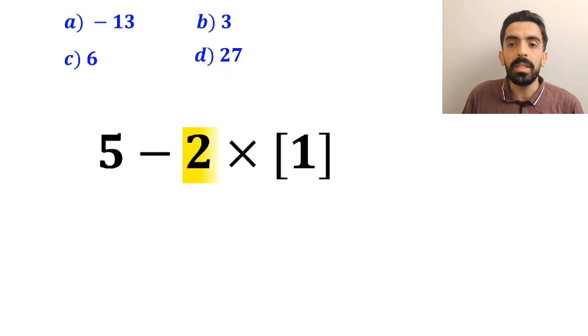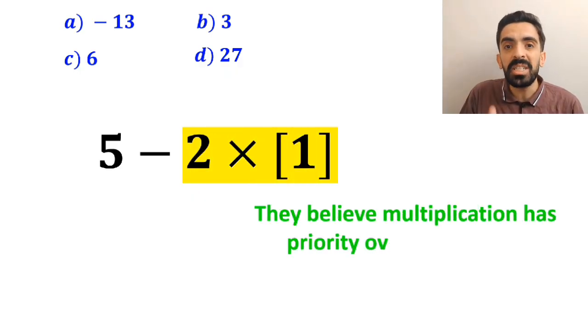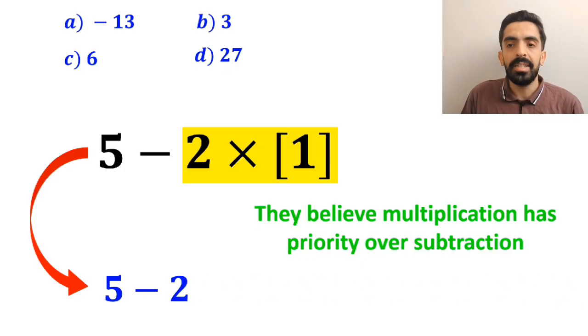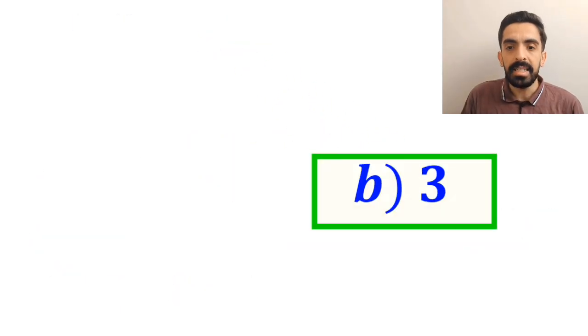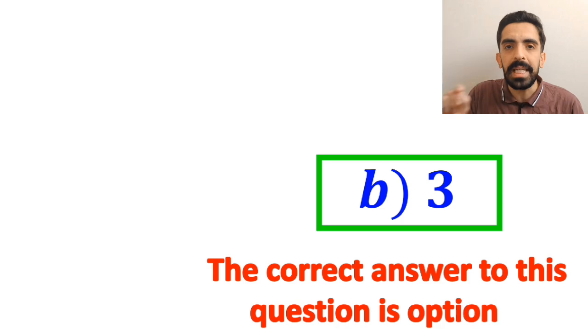Then, they go for the multiplication between 2 and 1, because they believe multiplication has priority over subtraction. So, instead of this expression, they write 5 minus 2, which finally gives them the answer 3. And immediately, they say that the correct answer to this question is option B.